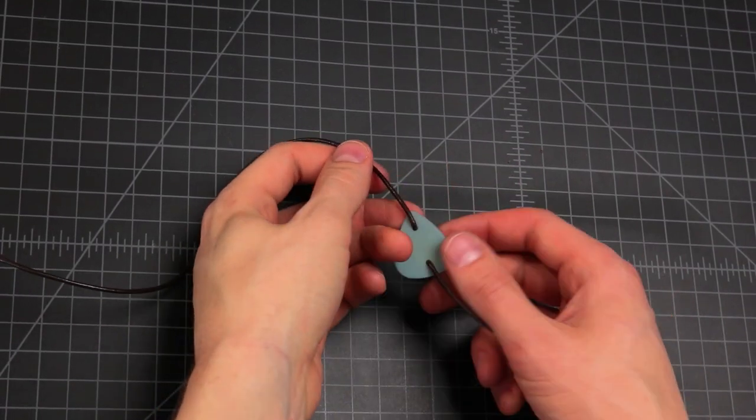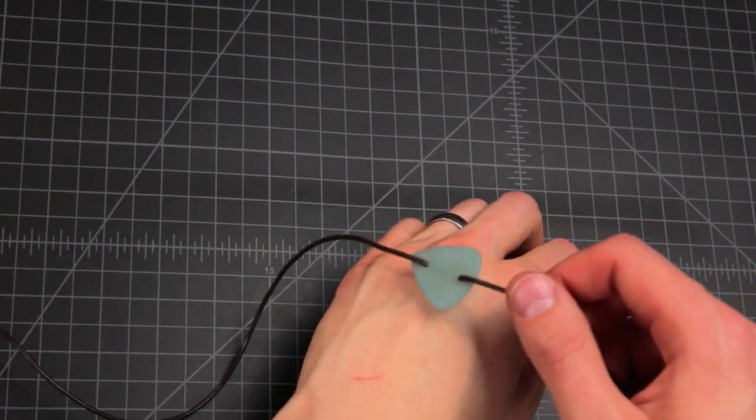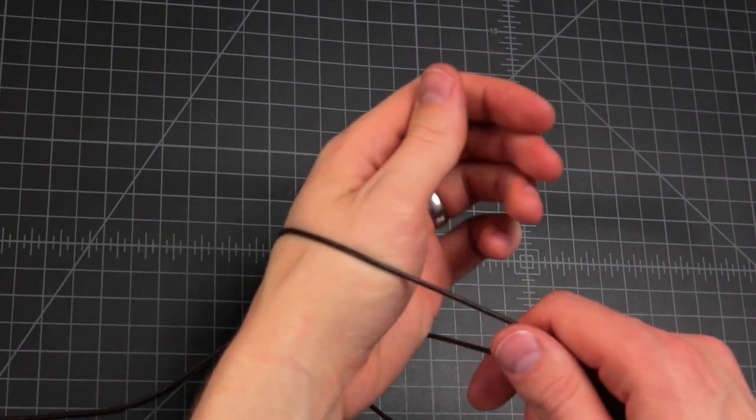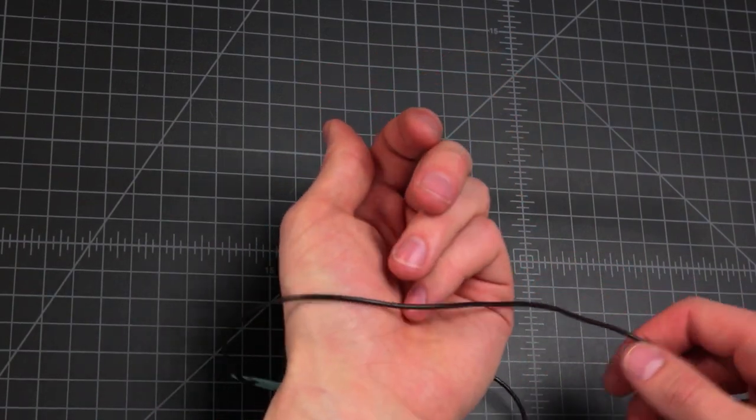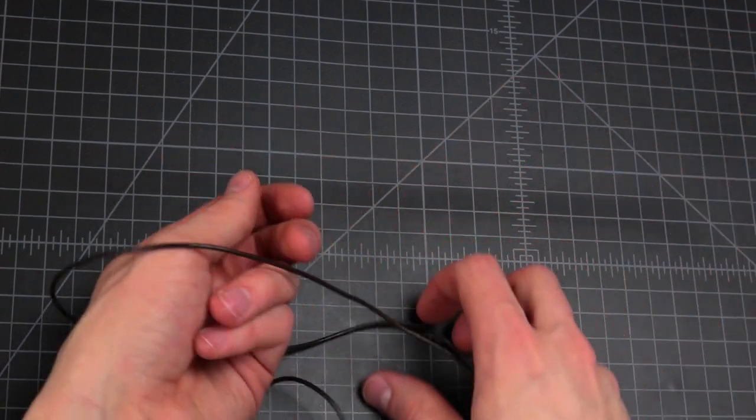Once you have your cord threaded through your pick, go ahead and wrap that around the widest part of your hand. Then you're going to do once around with each end, with the pick on the bottom of your hand.